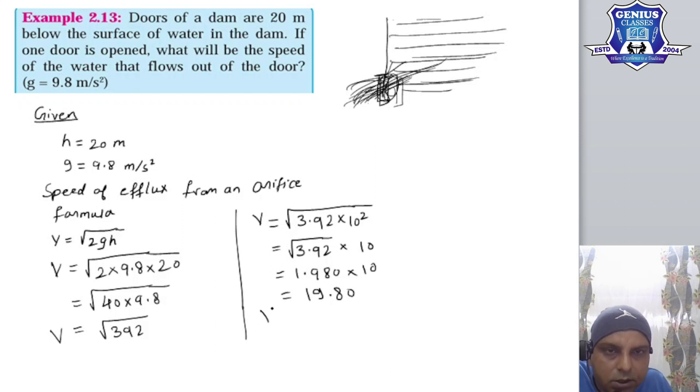It means the velocity of water at the door is 19.8 meters per second. This is the answer. Okay? The answer is simple. This question was easy.